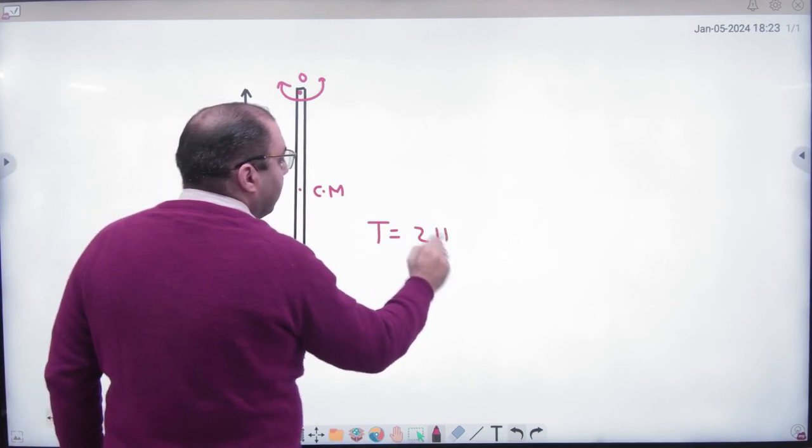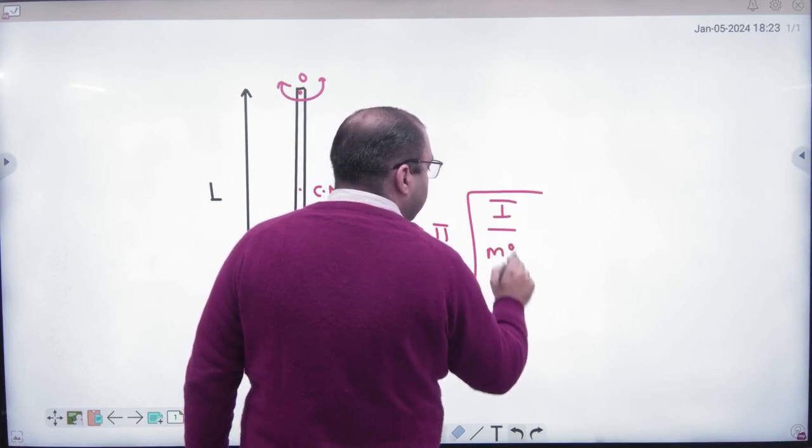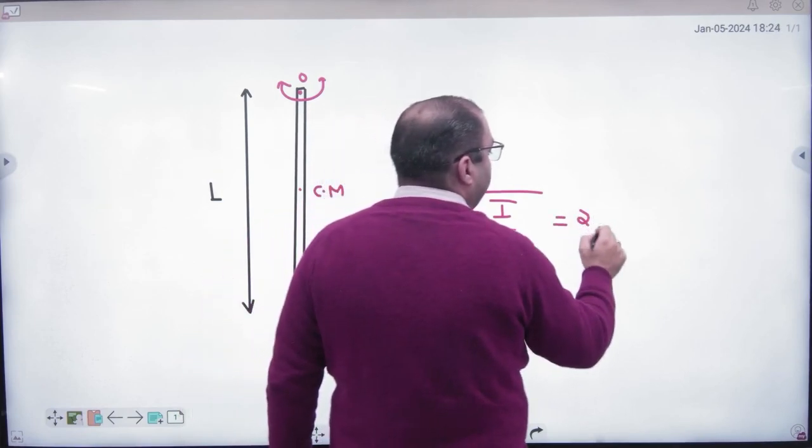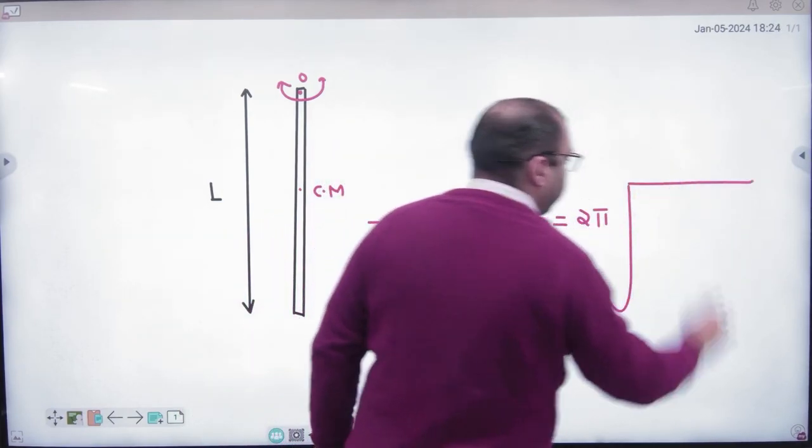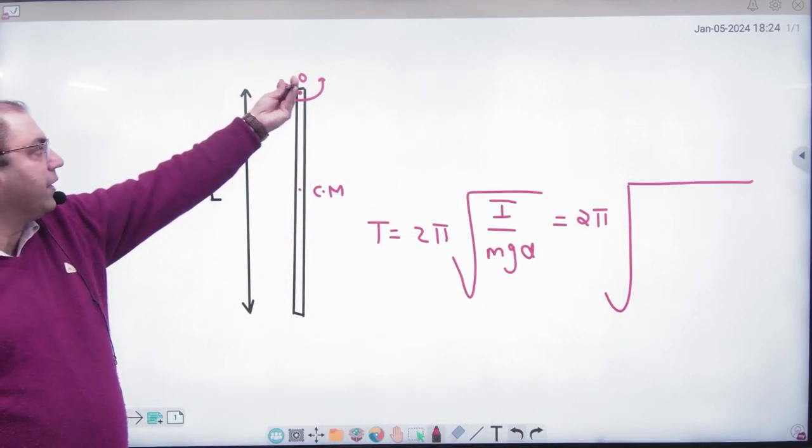If this will be to and fro motion, T equals 2π under root of I by mgd. Say 2π, I put... Where is the axis? Where is the axis? Here.